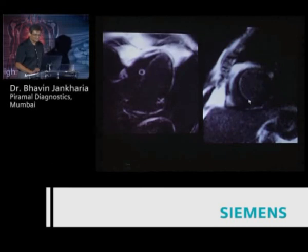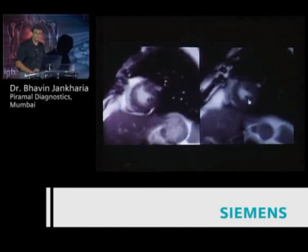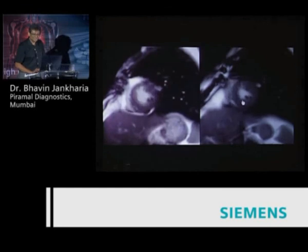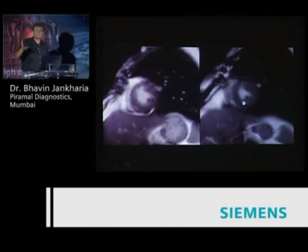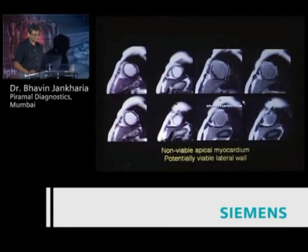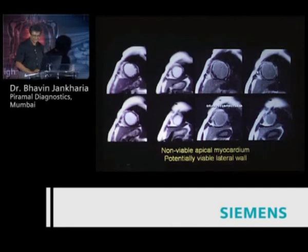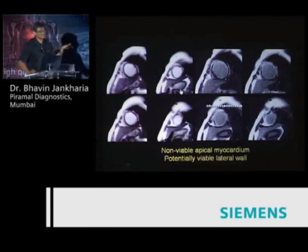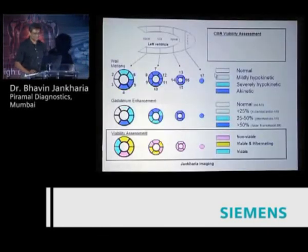Here is a patient with approximately 40-50% infarct. We recommended revascularization, and you can see moderate hypokinesia in the septum before, and after revascularization the function has improved — demonstrating that cardiac MR helps us decide whether a patient should be revascularized. In contrast, the first patient shown had most myocardium with full-thickness or greater than 50% infarct and most segments akinetic — in that case revascularization is unlikely to help, and this is non-viable myocardium.